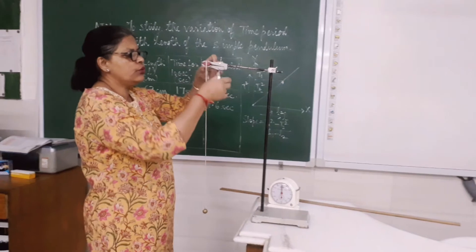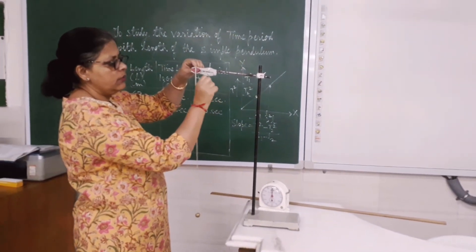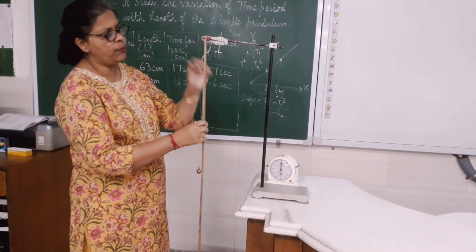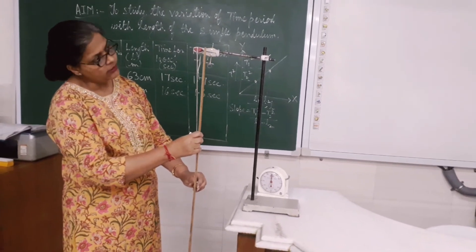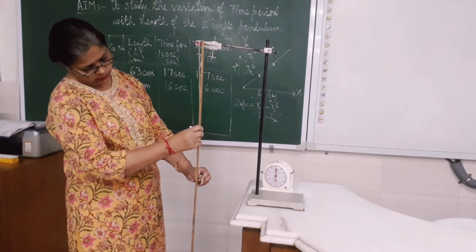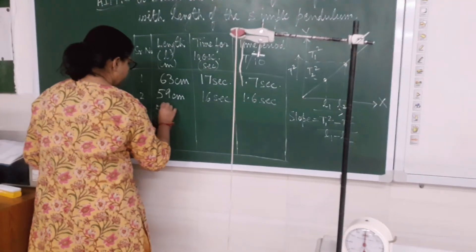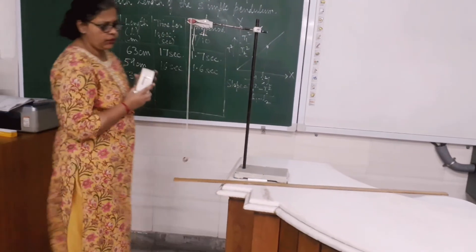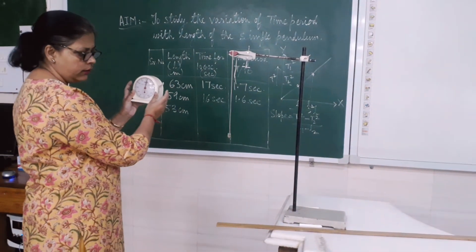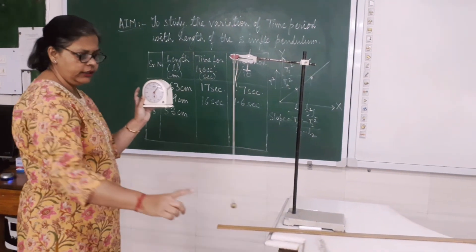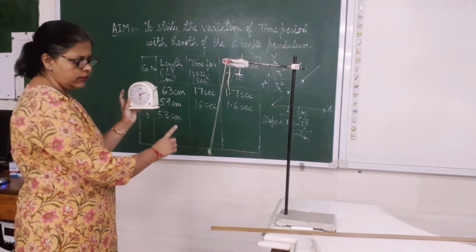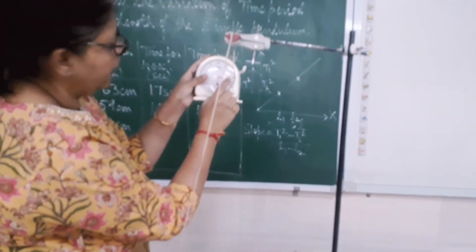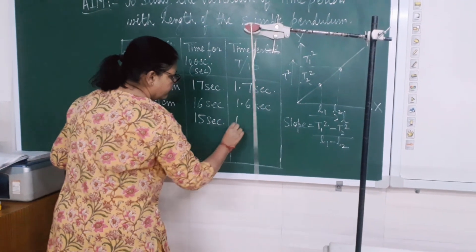Now let me take the third reading. Let me reduce the length of this pendulum. Every time I am reducing the length. Now I will measure the effective length again from the point of suspension to the center of the ball — it is showing 53 centimeters. Now I will measure the time taken to complete 10 oscillations again. I start: 1, 2, 3, 4, 5, 6, 7, 8, 9 and 10. So it is coming to around 15 seconds. So, children, the time period is 1.5 seconds.